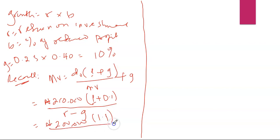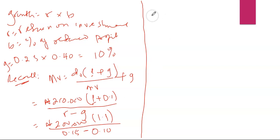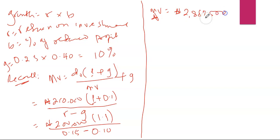Our g still remains at 10 percent. So the calculation is 200,000 × 1.1, which gives 1.1 in the numerator, over 0.15 minus 0.10 in the denominator. If we multiply and divide this out, we are going to get the market value.